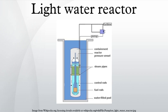The pellets are stacked, according to each nuclear core's design specifications, into tubes of corrosion-resistant metal alloy. The tubes are sealed to contain the fuel pellets, these tubes are called fuel rods. The finished fuel rods are grouped in special fuel assemblies that are then used to build up the nuclear fuel core of a power reactor.